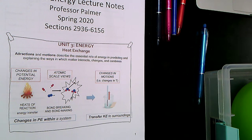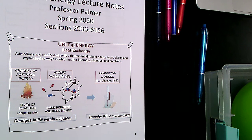The first part of Unit 3, we'll be thinking about thermochemistry, which is all about heat transfer. And then the second part of Unit 3 is all about light energy and how we use light energy to study the structure of the atom.